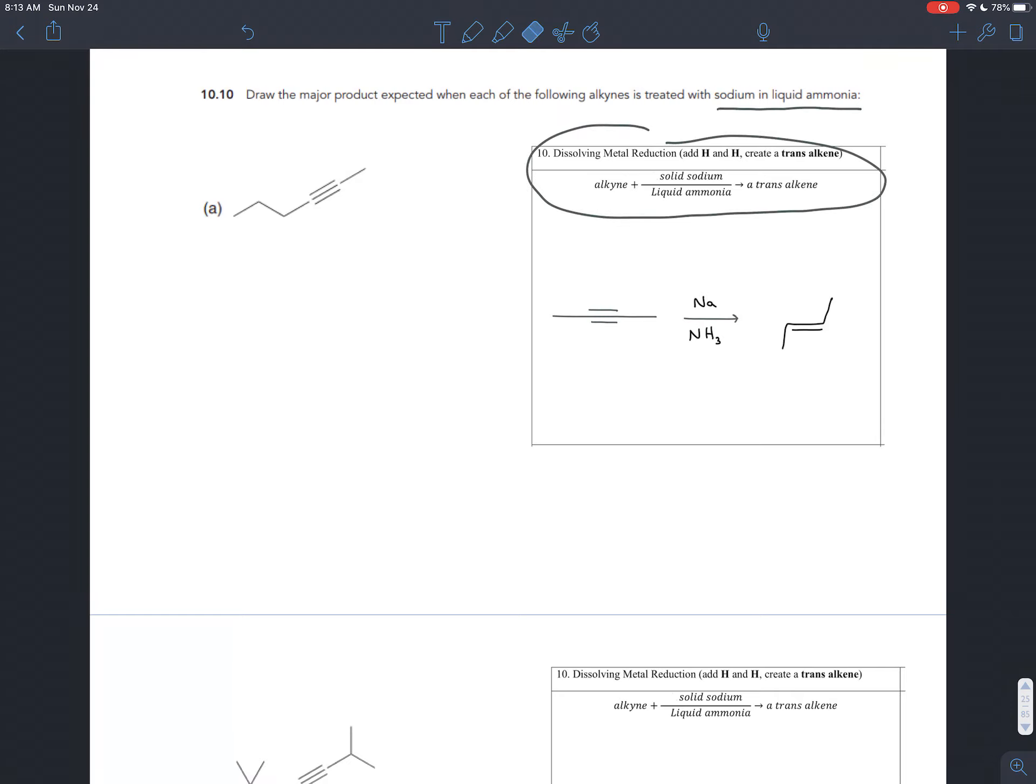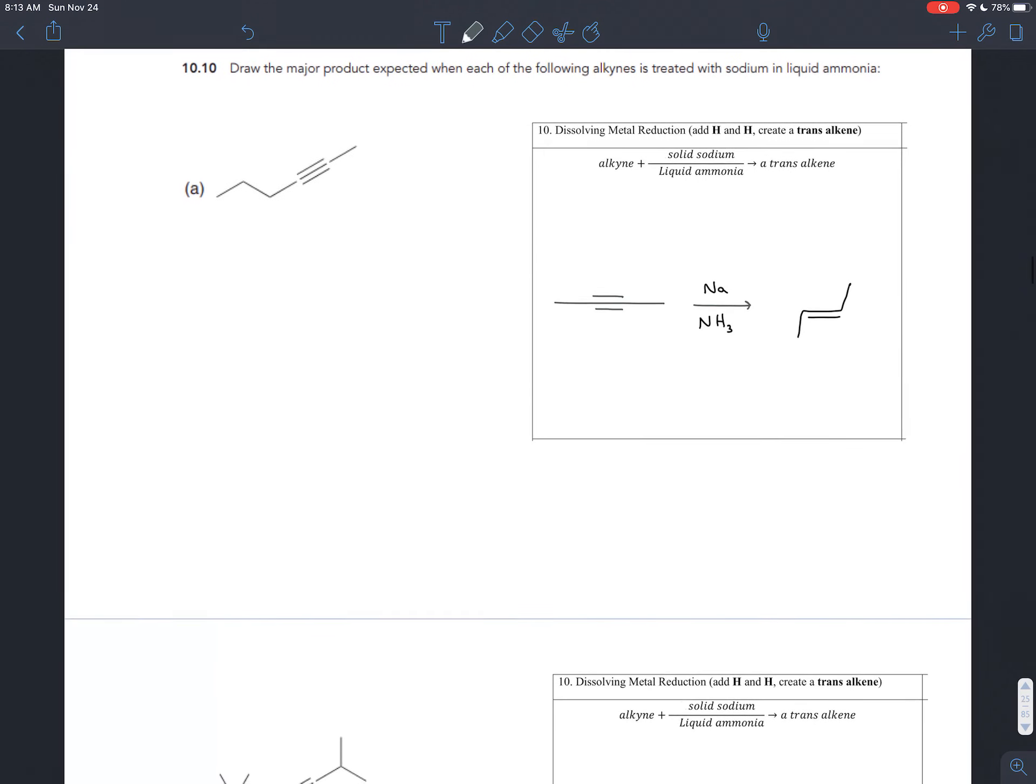And so it turns an alkyne into a trans alkene. And we drew the mechanism for that in a previous video. So if you're interested in how this is happening, I would encourage you to see that previous video. But for now, just from the perspective of synthesis, from the perspective of putting all this stuff in an oven, what pops out when the dinger rings? It's going to be a trans alkene.